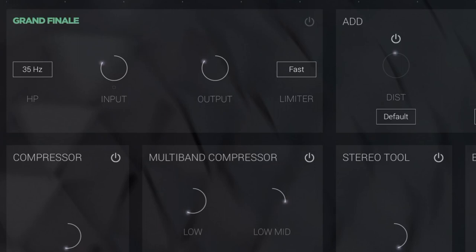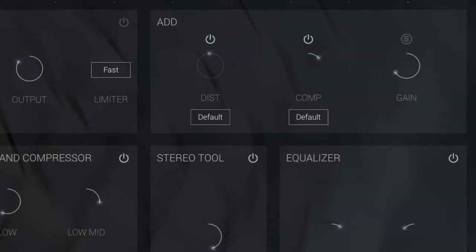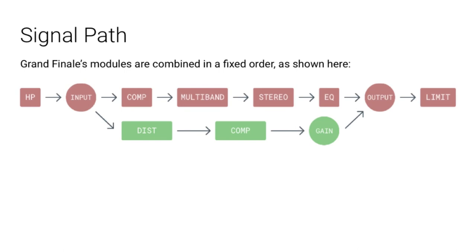We have an addition section over to the right, which is processed concurrently with all of the other things at the bottom. Looking at the signal flow diagram, you can see all the processing goes through the main effects chain at the bottom, and then there's this additional effects chain which we can completely ignore — but it gives us an additional compressor, a distortion plug-in, and some additional gain control if we need more gain at the end.